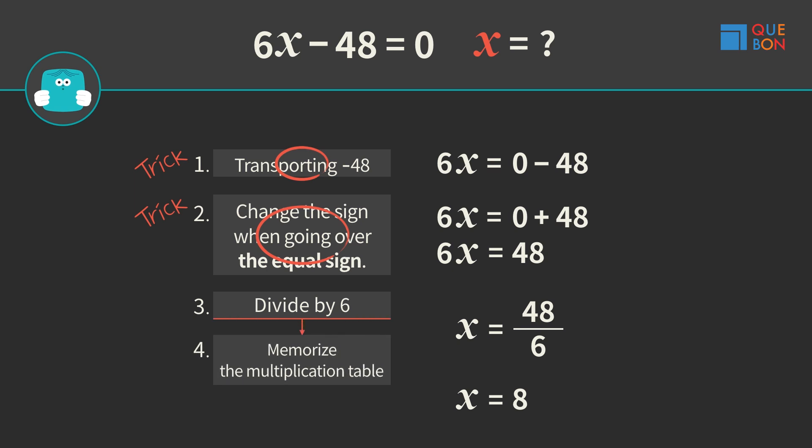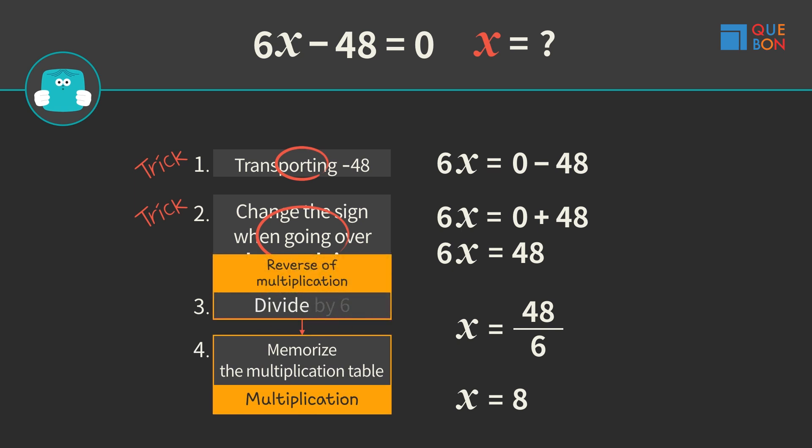What does Sweaty do after dividing by 6? Sweaty recalls the multiplication table. Didn't we all learn that we should multiply in reverse instead of dividing?